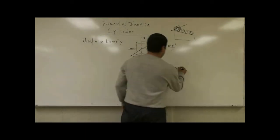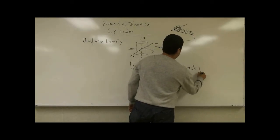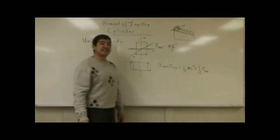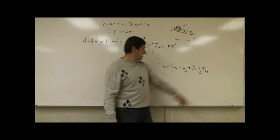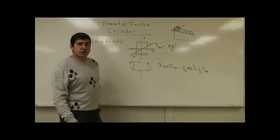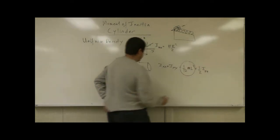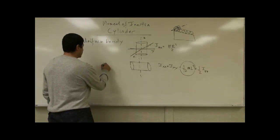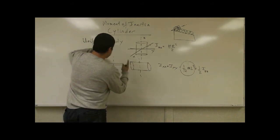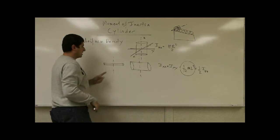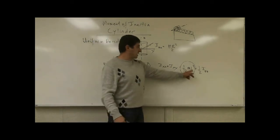It turns out that IXX equals (1/12)ML² plus half of IZZ. So whatever IZZ of the cylinder is, we take half of that and add (1/12)ML². You can see where this is coming from because the cylinder acts like a rod, and when a rod rotates around its midpoint, the moment of inertia we've already proven is (1/12)ML².